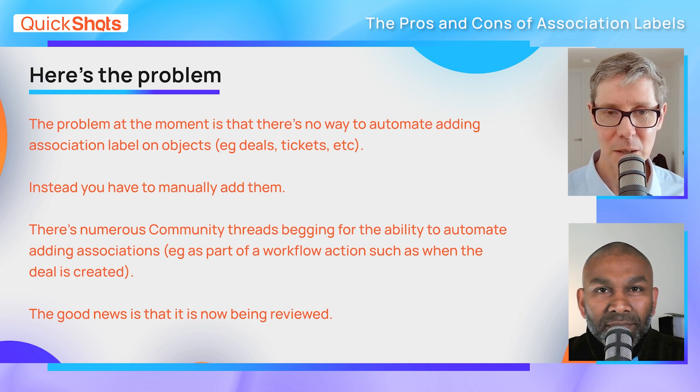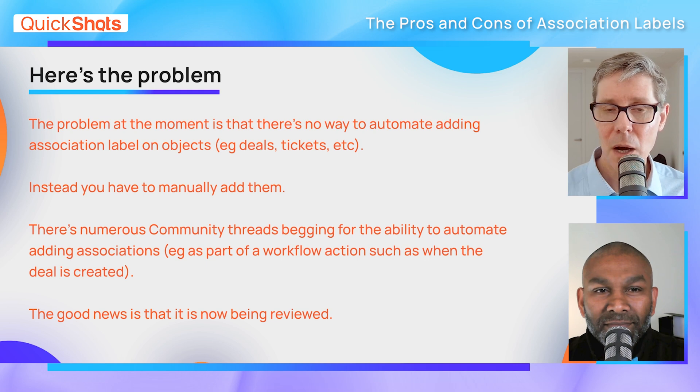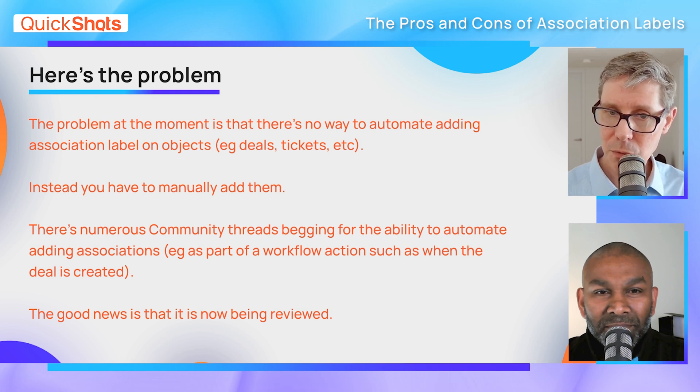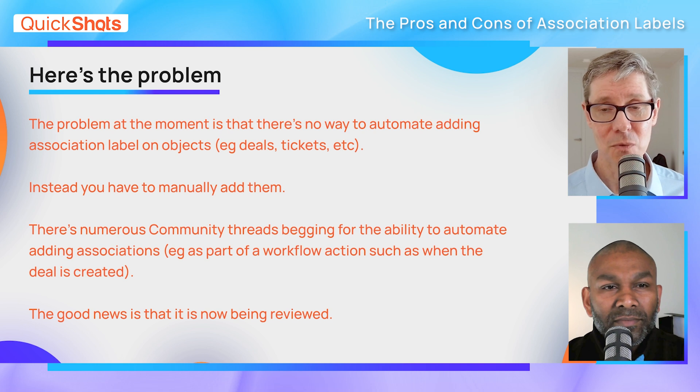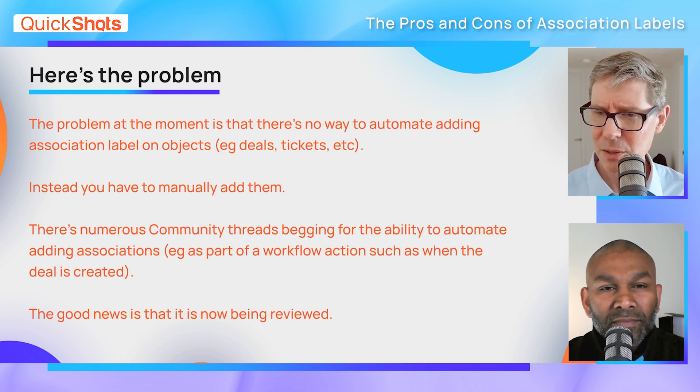If we could set association labels at deal creation time, that unlocks an enormous amount of efficiency in updating and keeping your deals in check. This is a big feature for sales - it applies to tickets and other areas as well, but particularly deals is where we're seeing this. The good news is that feature is being reviewed, so that you'll be able to add association labels automatically as part of workflows. That unlock is going to be really handy.